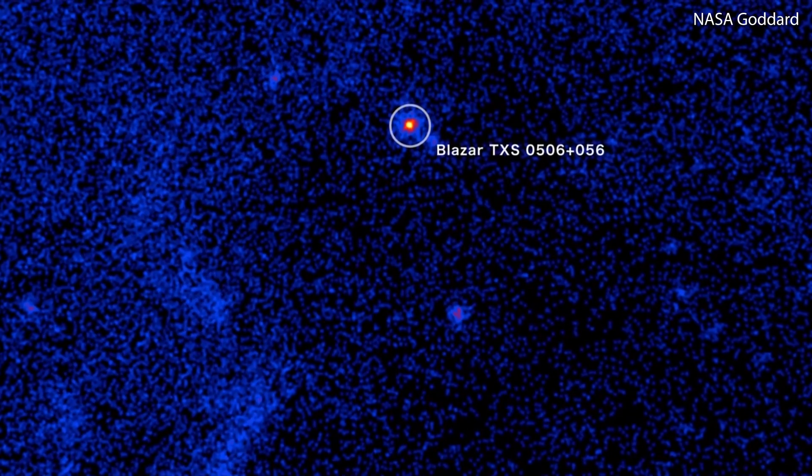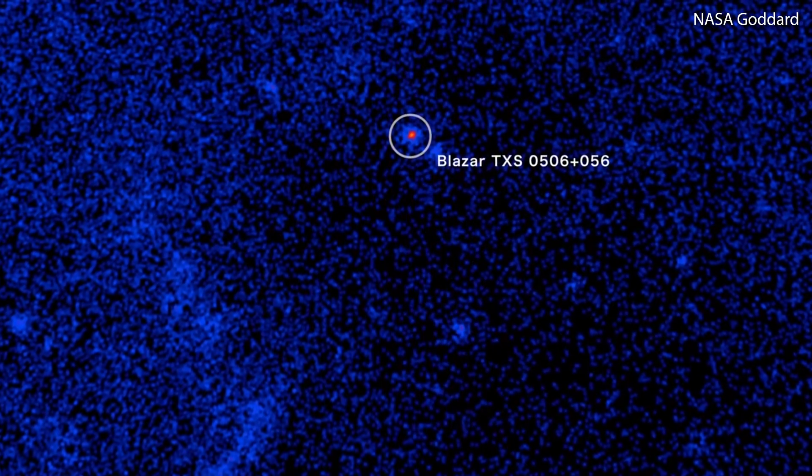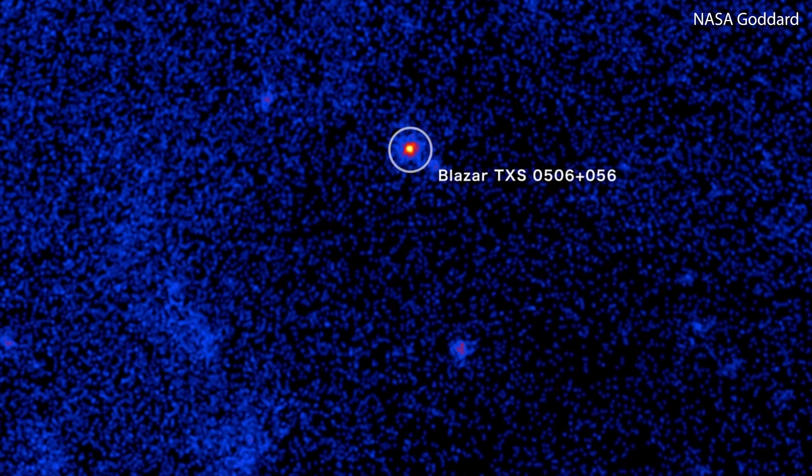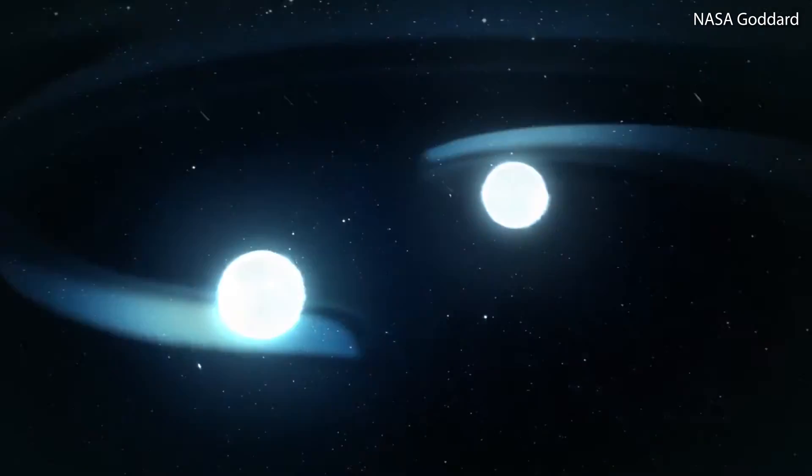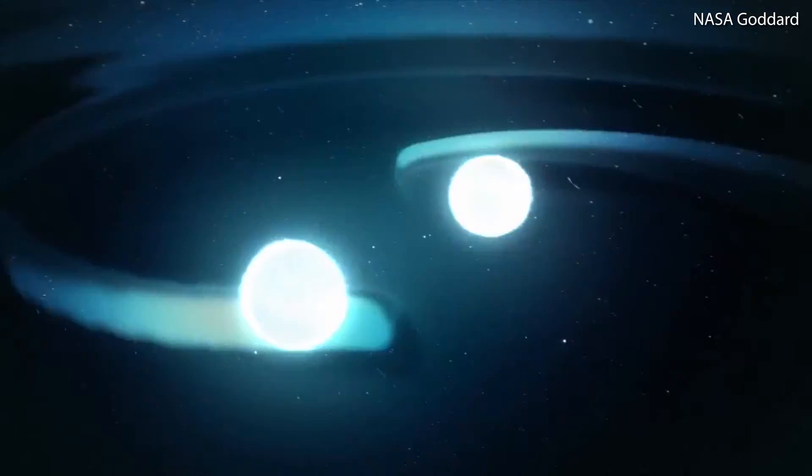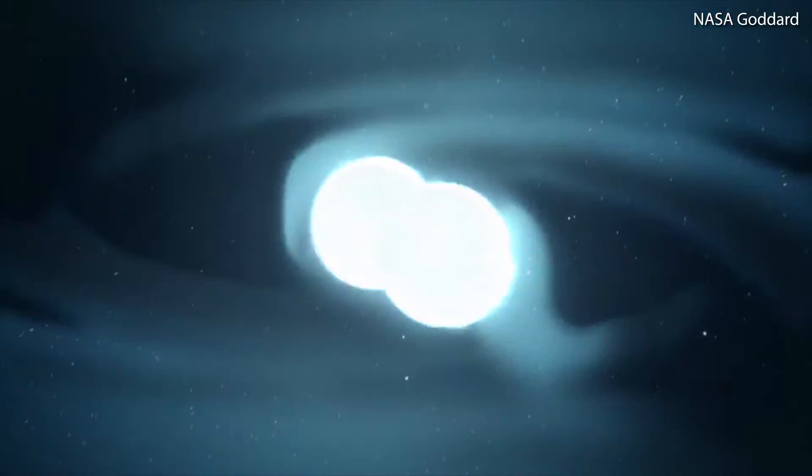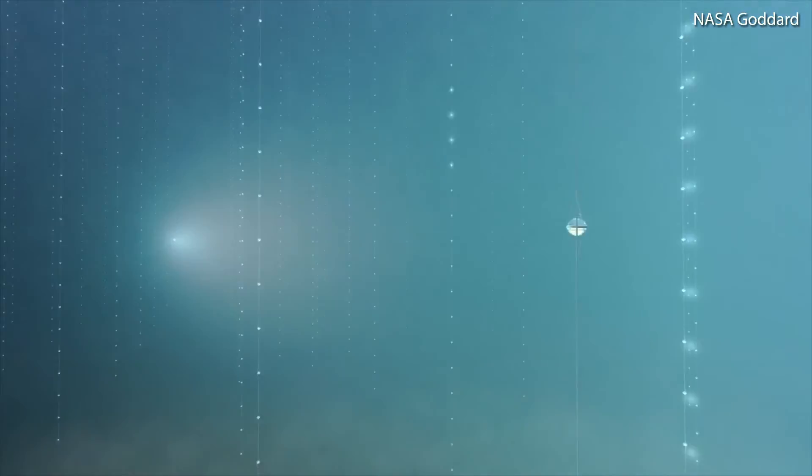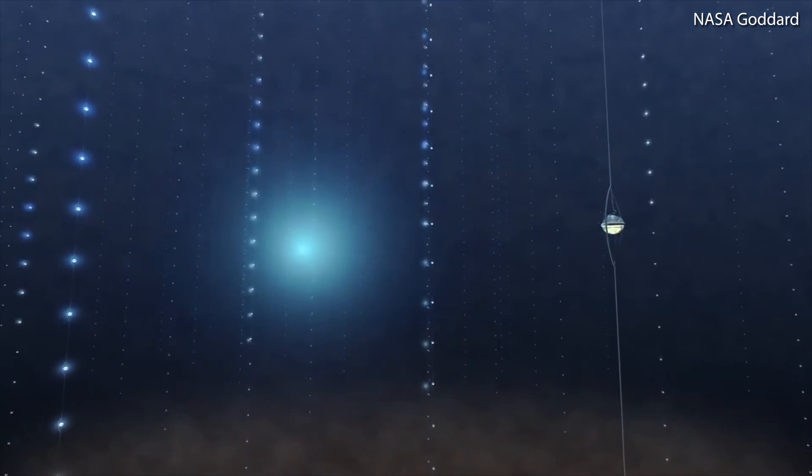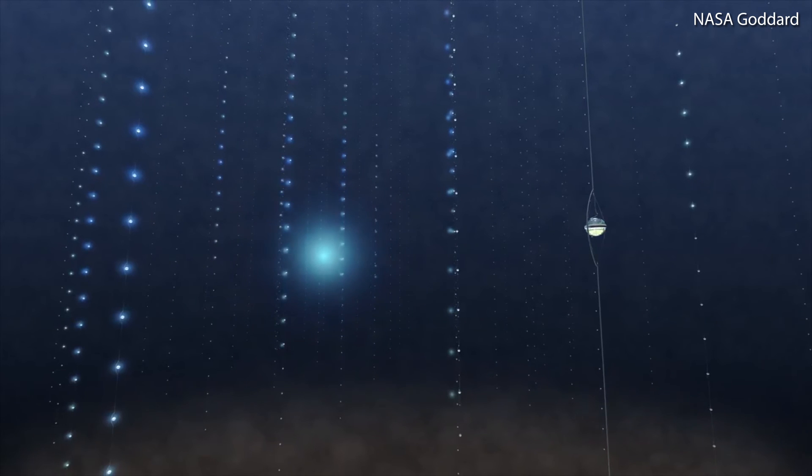It's the first time a neutrino could be traced back to a black hole, or to any source beyond our immediate galactic neighborhood. And it's an important step forward for a growing field scientists call multi-messenger astronomy, which combines light with new signals, like gravitational waves and neutrinos, to provide new insights on the most extreme cosmic phenomena.